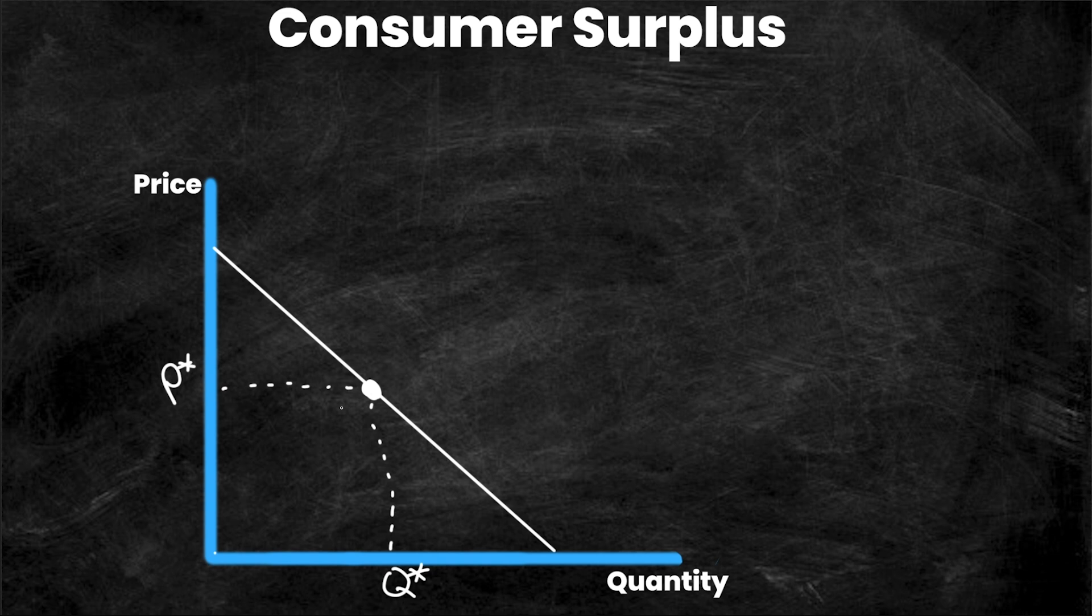But when thinking about consumer surplus, you want to kind of flip that and look at quantity instead. So we could say with quantity set at Q star, what price are consumers willing to pay to consume this good? In this sense, the demand curve actually depicts the value that consumers place on a good. And it shows the maximum amount they're willing to pay to purchase a given quantity of the good. So if we have Q star here at this quantity available, people are willing to pay a price of P star.